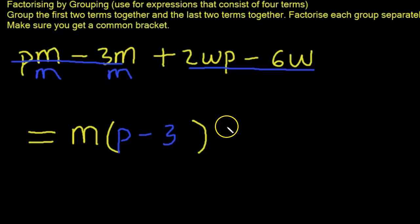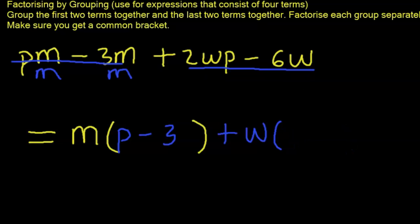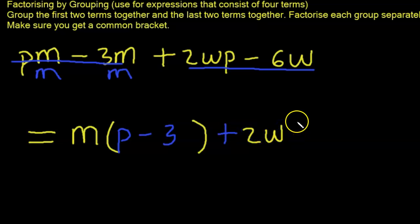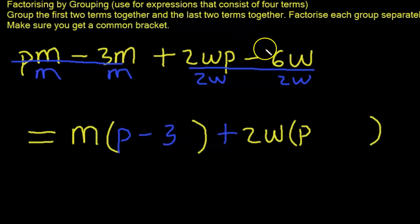For the second group — I made an error: the highest common factor is actually 2W, since 2 is also common. So we divide each term by 2W. So 2W into 2WP leaves P, and 2W into 6W gives — negative 6 divided by 2 is minus 3 — leaving minus 3. The second group factors to 2W(P minus 3). Notice the brackets are now the same, confirming the factoring is correct.